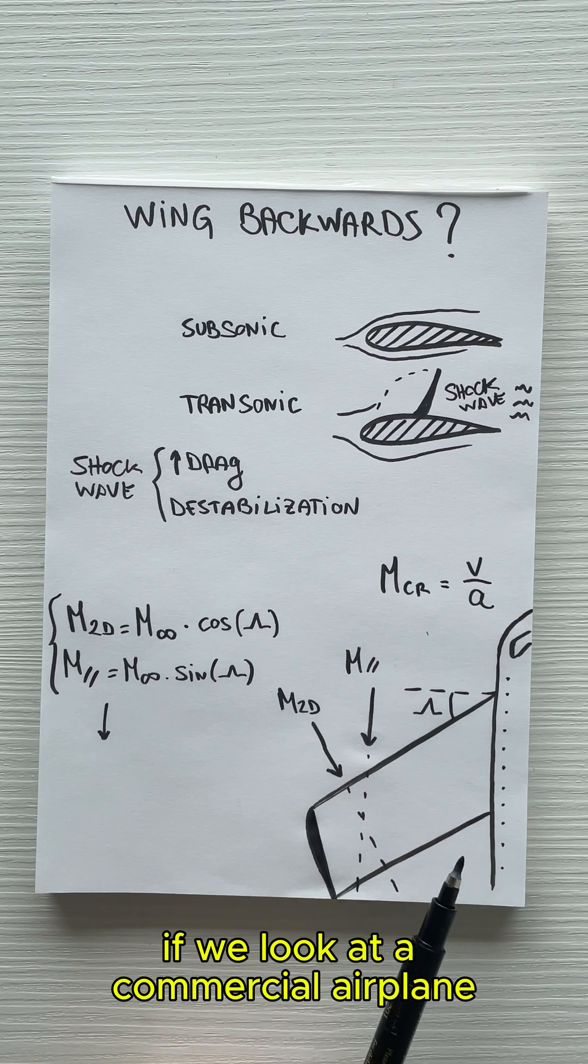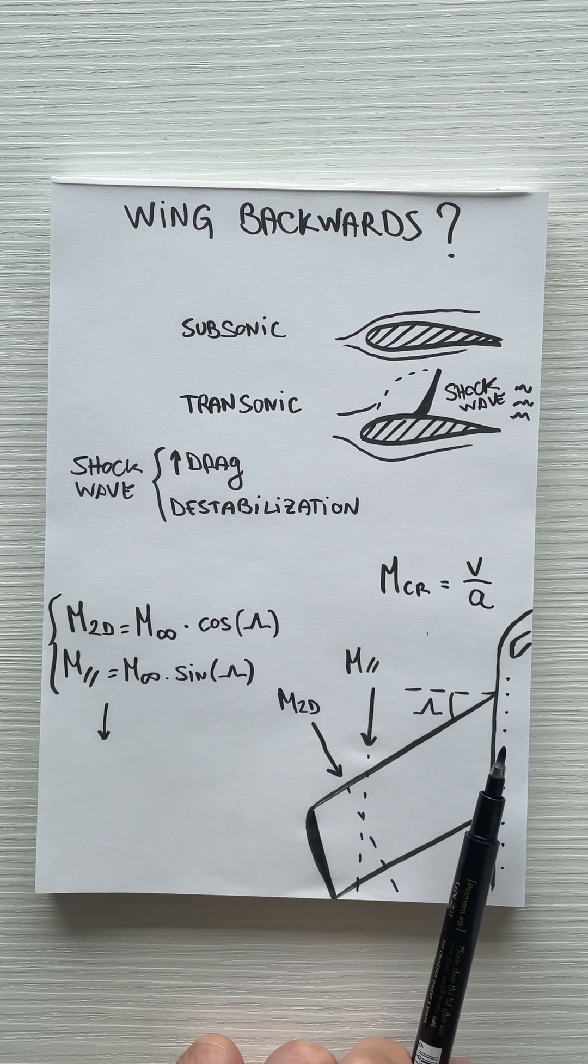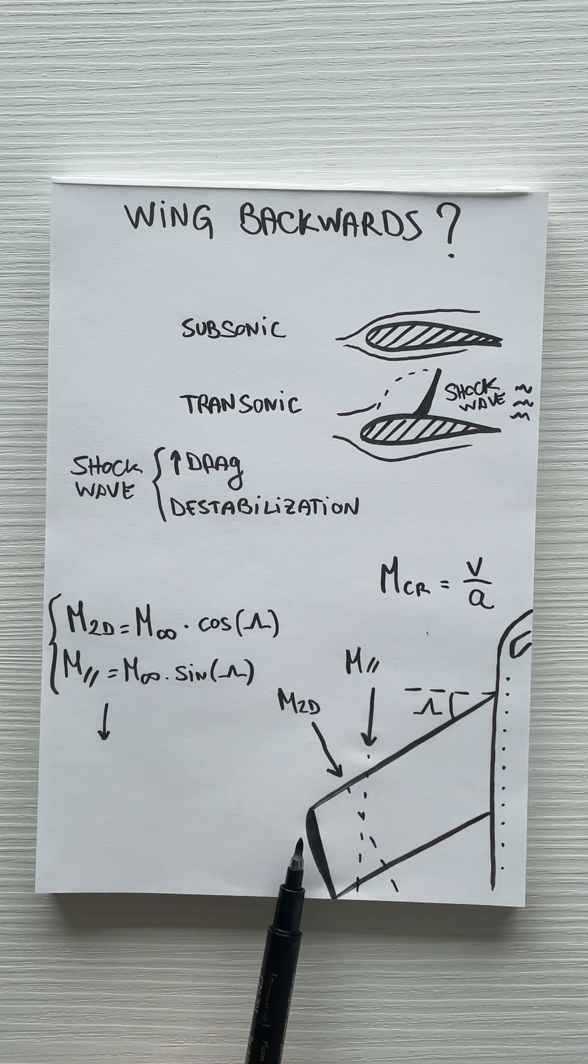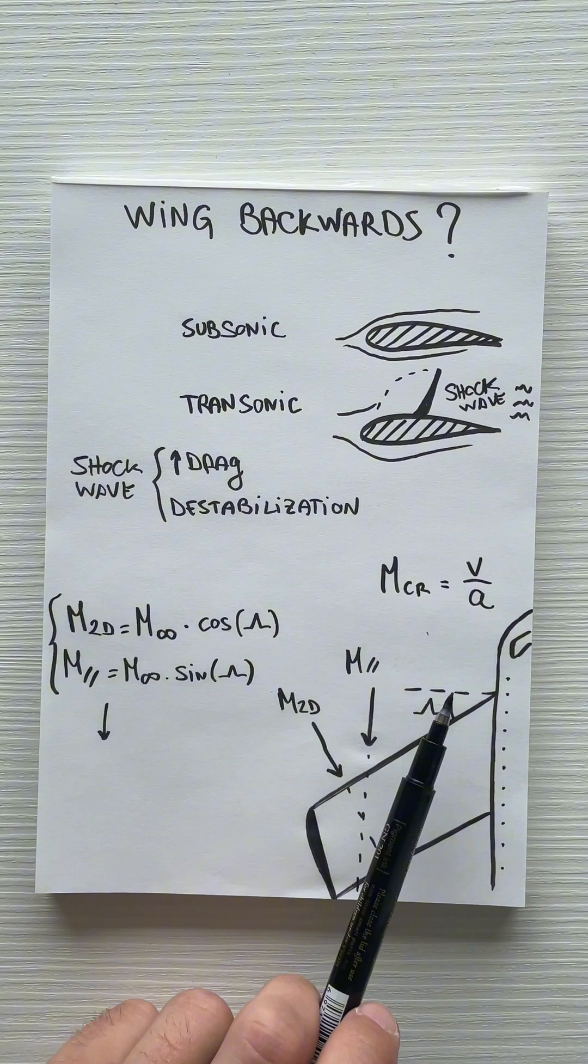If we look at a commercial airplane, we will have the wing that is backwards and the angle between the horizon and the wing leading edge is the sweep angle, of course.